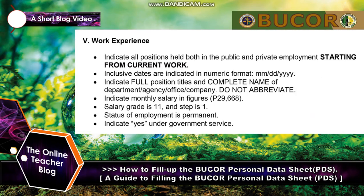Section 5 — Work Experience: indicate all positions held both in public and private employment, starting from current work. Inclusive dates should be in numeric format — month, day, year. Indicate full position titles and the complete name of the department, agency, office, or company — do not abbreviate. Indicate monthly salary in figures. For example: salary of 29,668, Salary Grade 11, Step 1, status of employment is permanent. Indicate 'Yes' under government service.